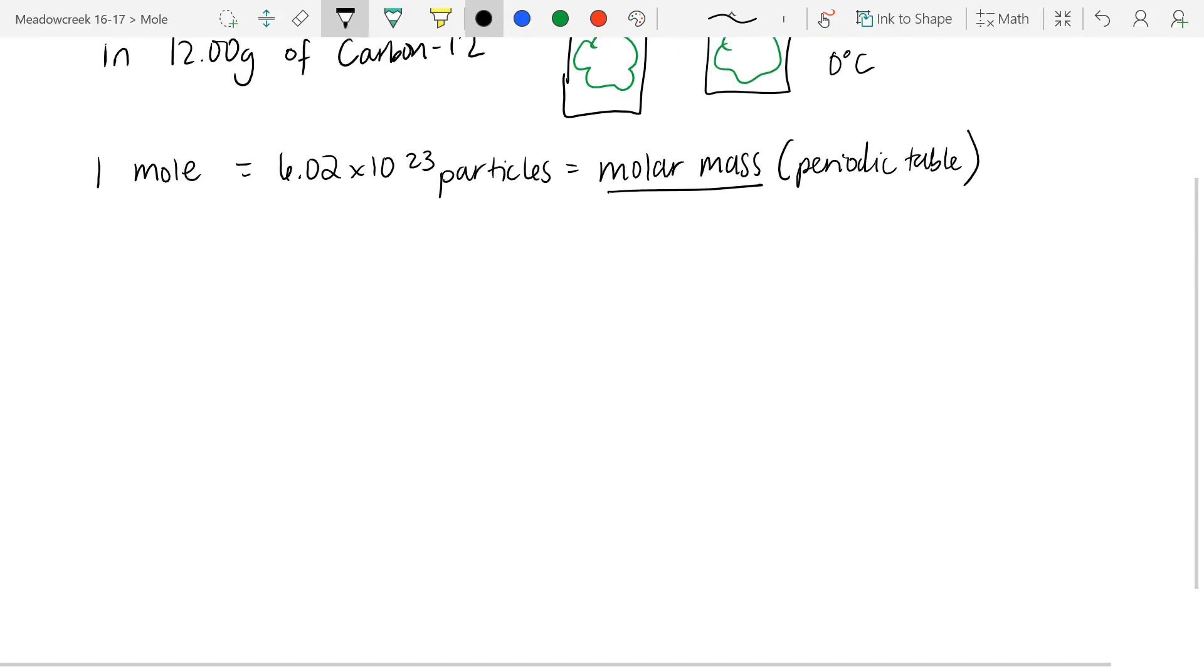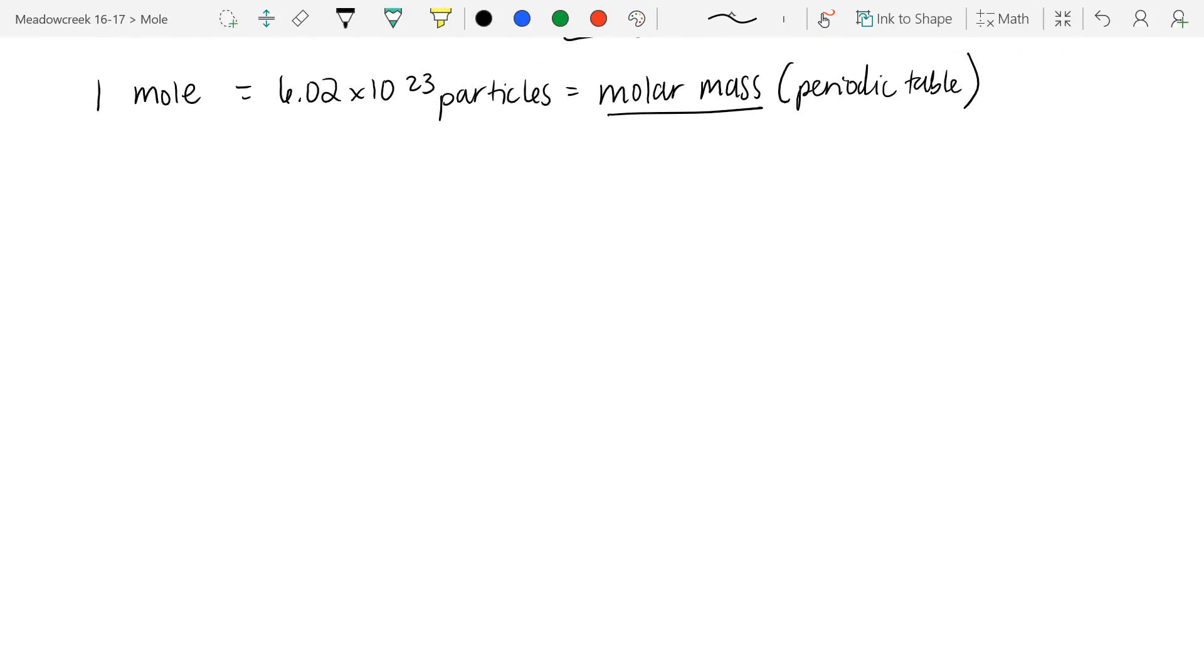Now let's use these conversion factors to actually do some converting. So if we're going to look at problem number one, we want to convert, let's say, 20 grams of NaCl and we want to convert that to moles.